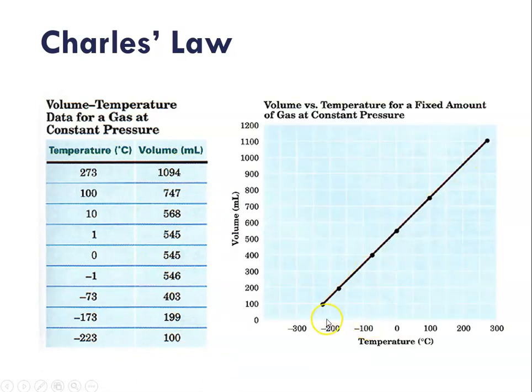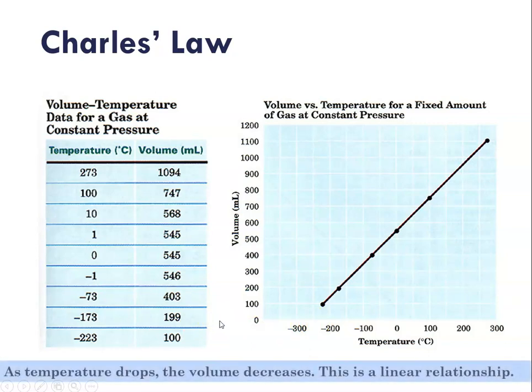And what Charles noted was that when the volume of a gas is zero, it corresponds to a temperature of -273.15 degrees Celsius. So what Charles did was he noticed that as temperature drops, volume drops, and it's a linear relationship.